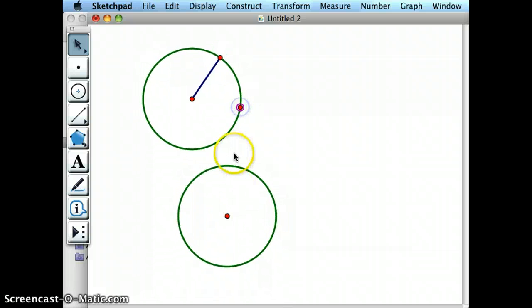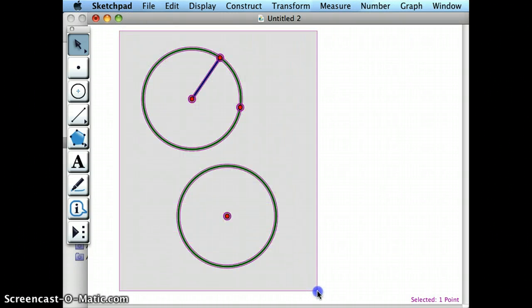But the key thing is that I need a segment that's the radius in order to be able to construct an equivalent circle. So that's going to be important when we copy an angle.